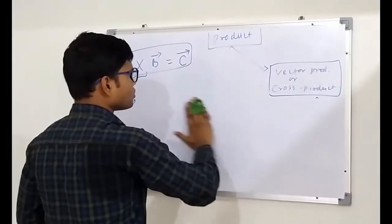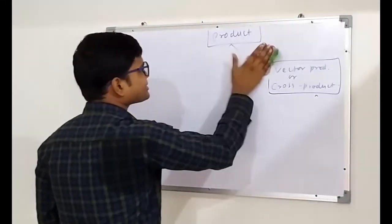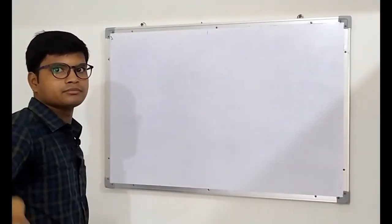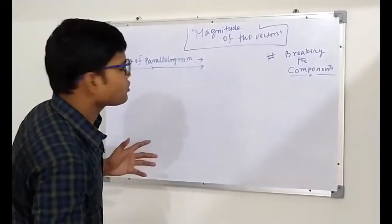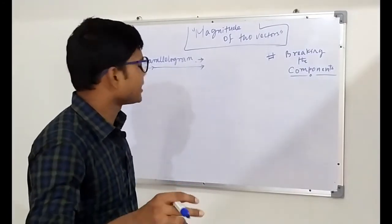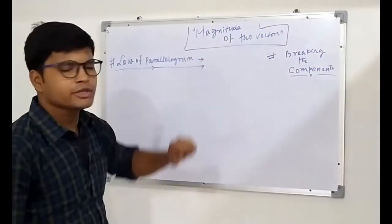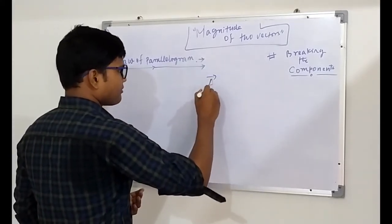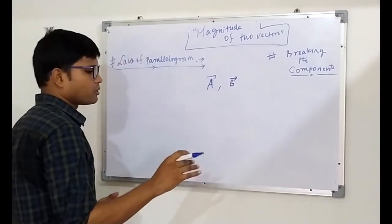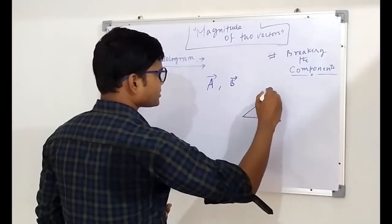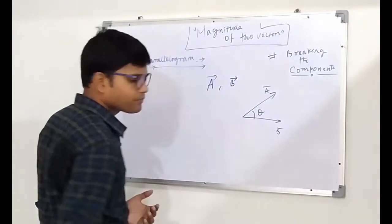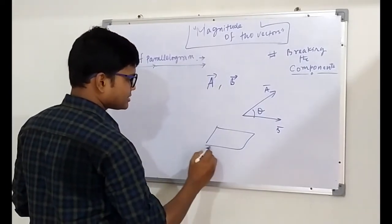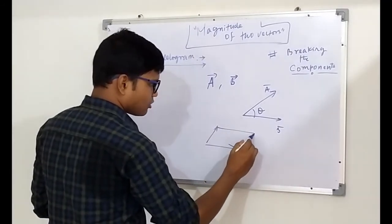We have now covered the cross product and dot product. Let's move to another topic: the magnitude of two vectors that are not aligned. If there are any questions so far, leave them in the comments. When we have vector a and vector b at some angle theta, we can use the parallelogram law. The idea is: trace lines parallel to each vector; where they meet gives the resultant vector.